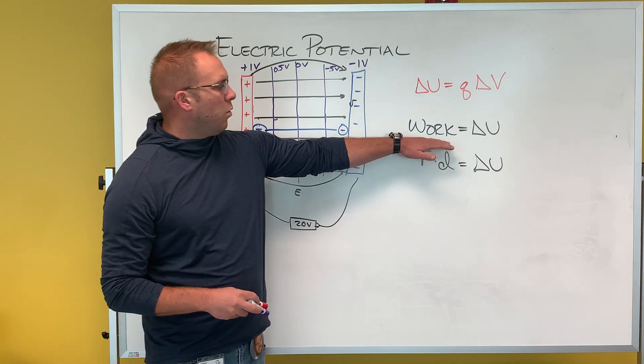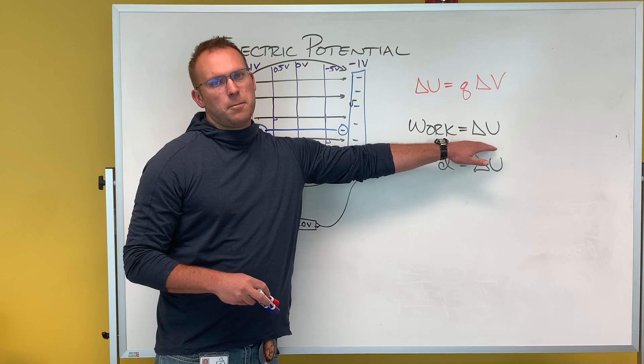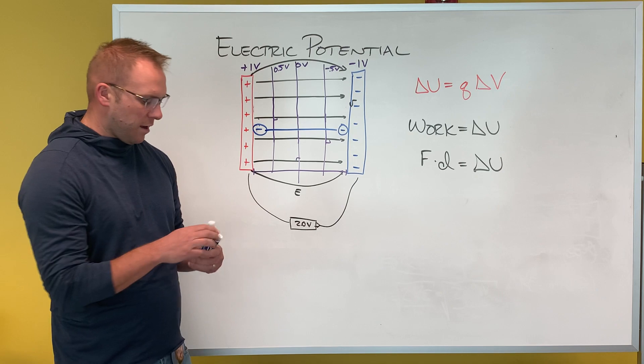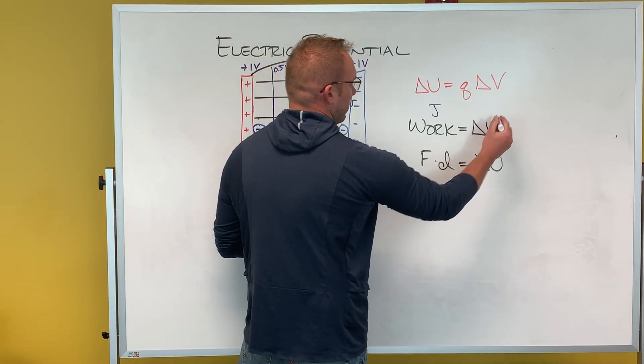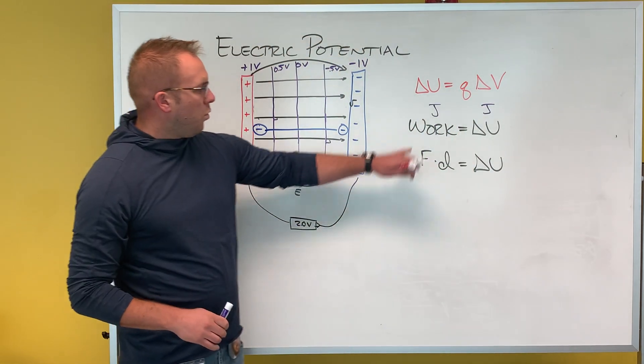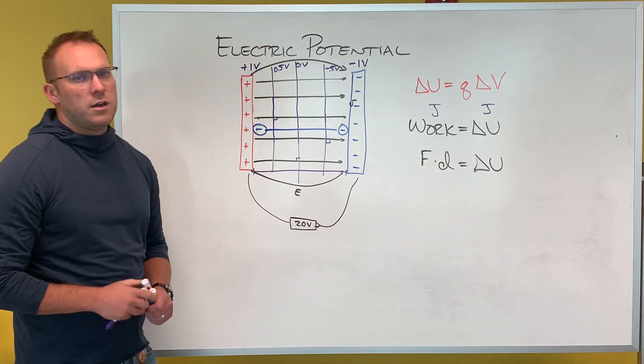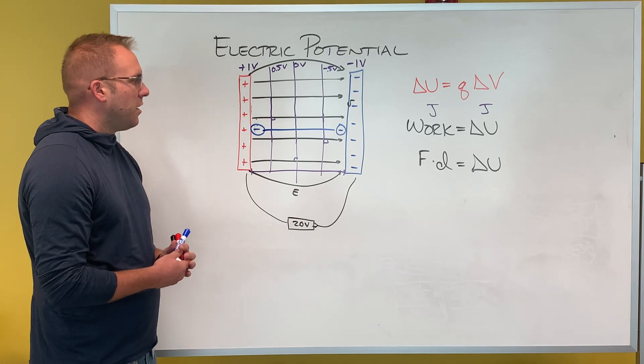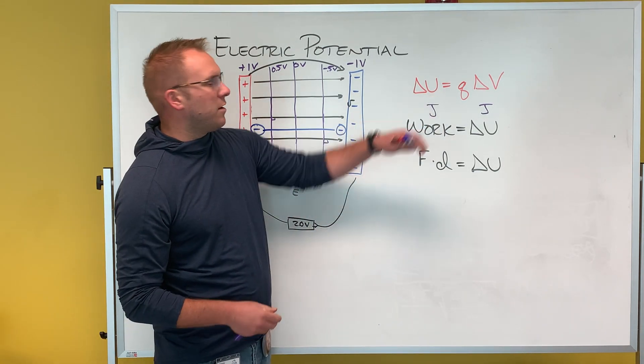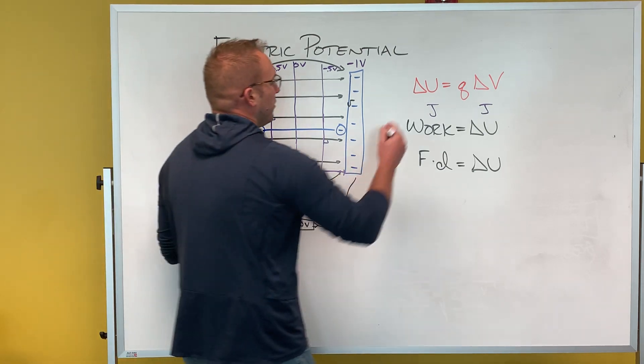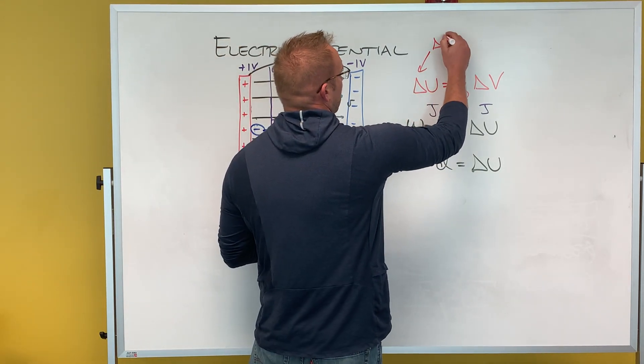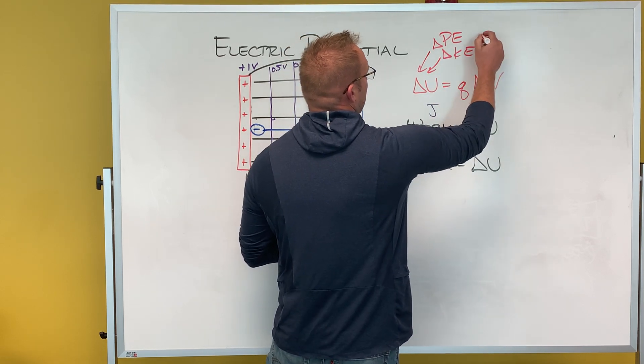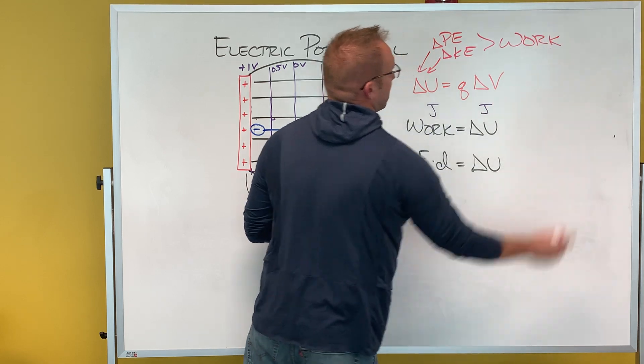What we also know is that work is a change in energy. So however much work I do, that's how much energy I change, because they are both the same. Work is measured in joules, and so is energy. Work is force times distance, and that still gives me a change in energy. So if I'm asked for the force, I'm asked for the distance that things move, I can still use this equation because the idea is not only is it a change in potential energy or a change in kinetic energy, it is also how much work can be done.